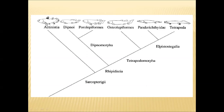So now we are having only Actinistia, Dipnoi, and Tetrapoda groups living; remaining all these groups are extinct. Coming to the classification of Sarcopterygii — it is divided into two groups. One is Actinistia, in which we have Coelacanth fishes. Except for Coelacanth fish, all remaining representatives of Actinistia are extinct. Only Coelacanth fishes are living.